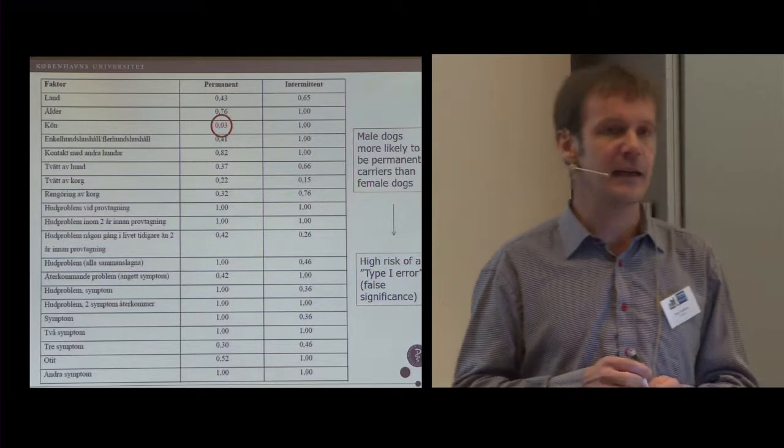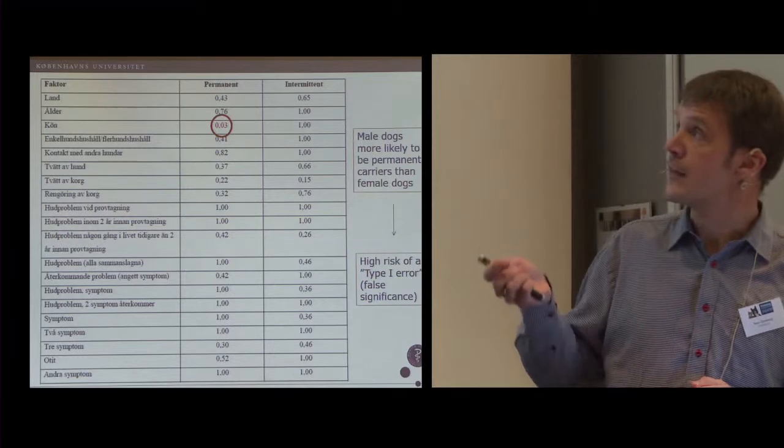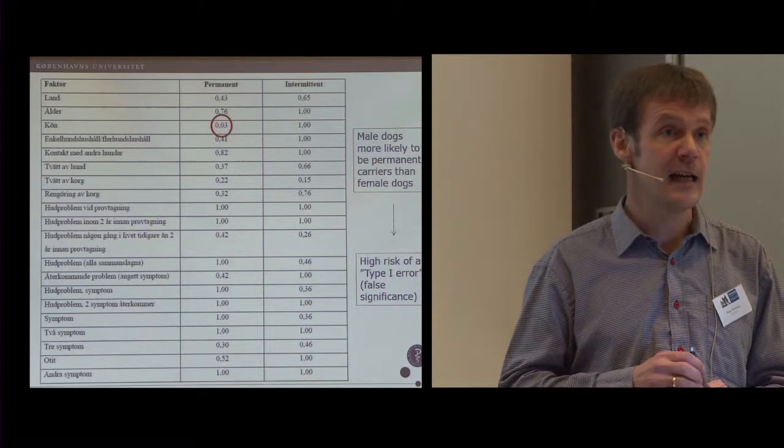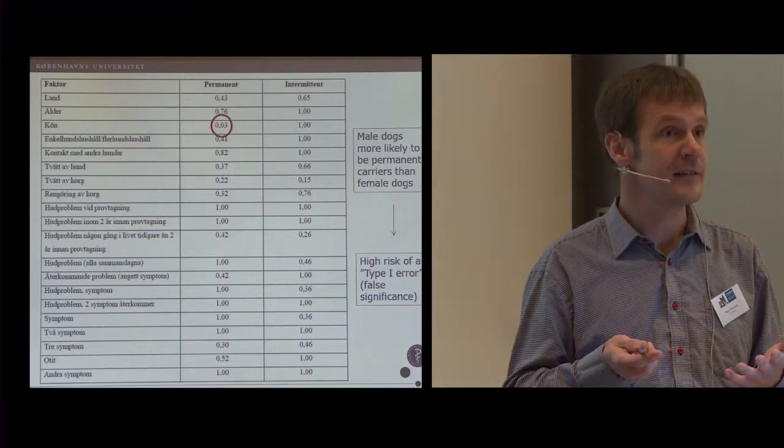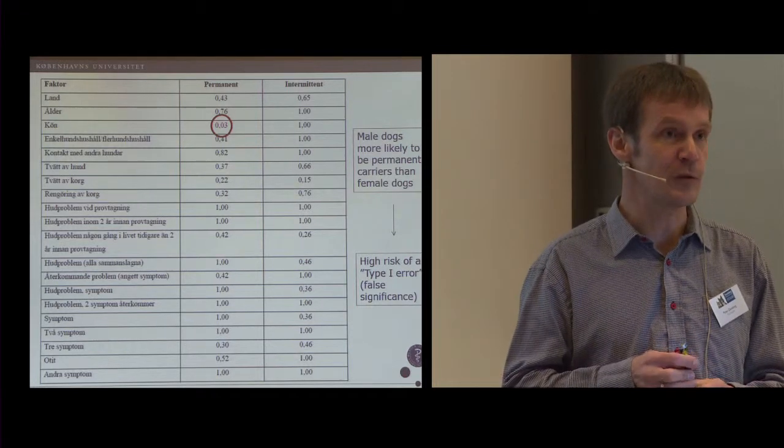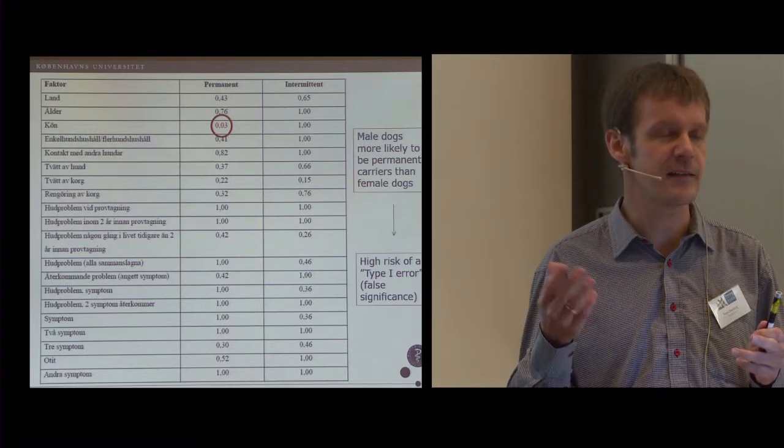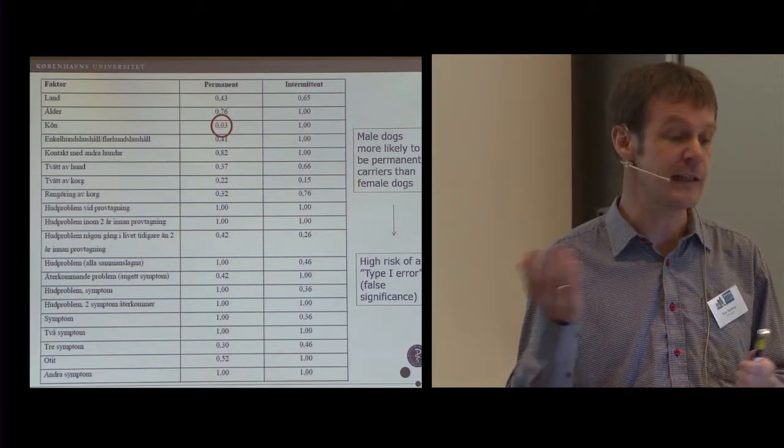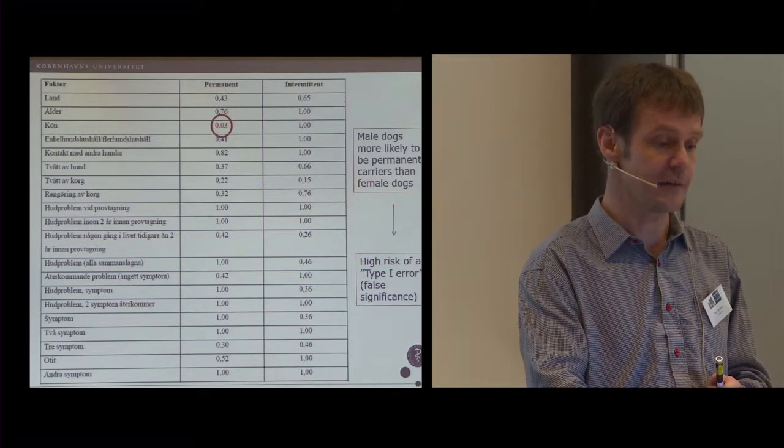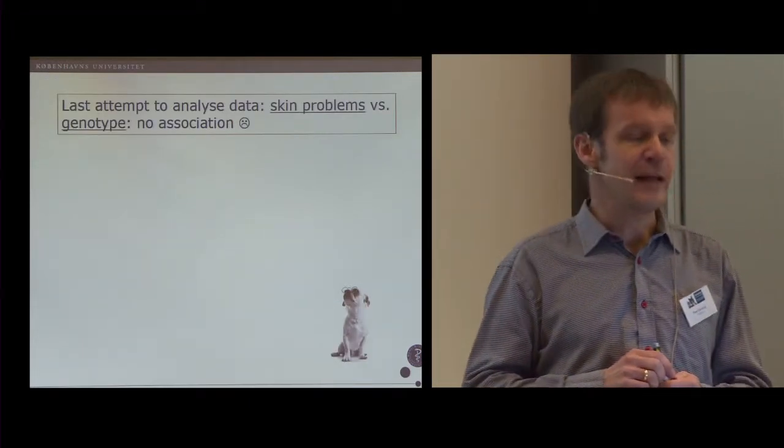Another thing is that we are afraid this might be a false significant result, because as you can see, we had a lot of different factors that we compared statistically. And the more factors you compare, the higher the chance that one of them will by incident be significant. So this is what we call a type one error statistically. We think this could be a type one error, but it needs to be validated if it should be taken for granted.